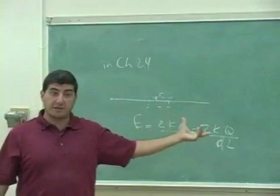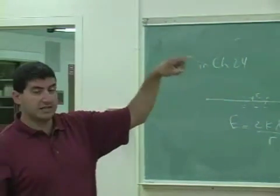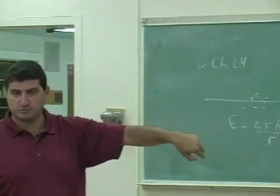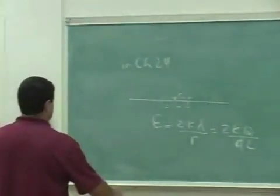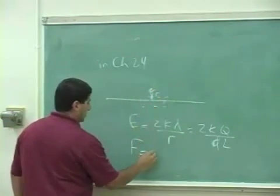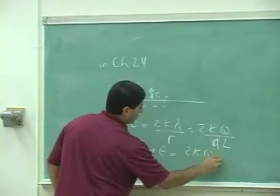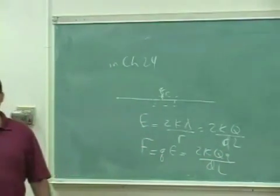And this is the electric field, whereas we found the force. So the only difference is that the force includes the little q. All right, the force, if you put a little charge q there, is equal to qE. So it's equal to q times 2kq, little q over dl. So there you go.